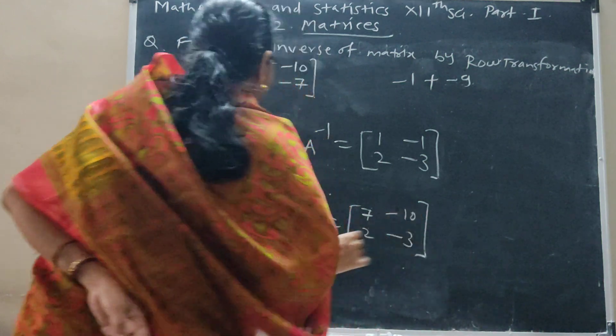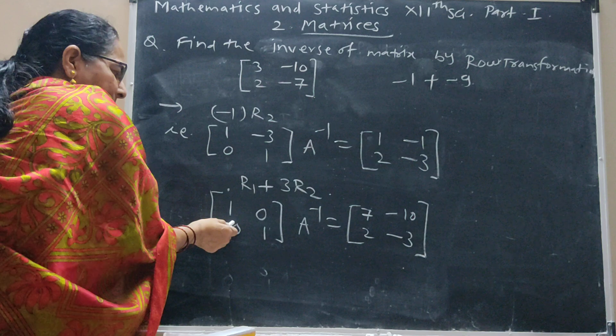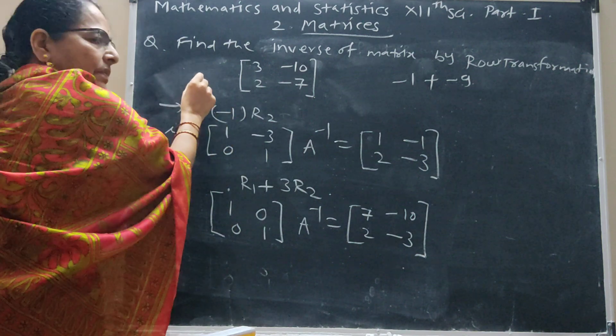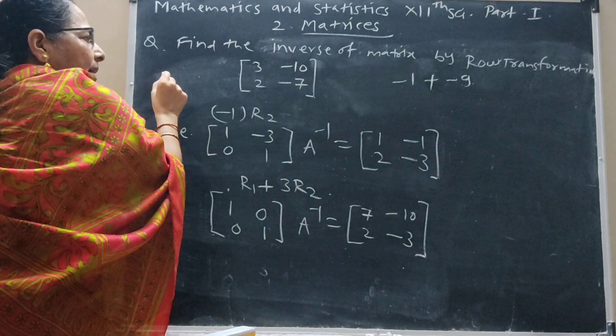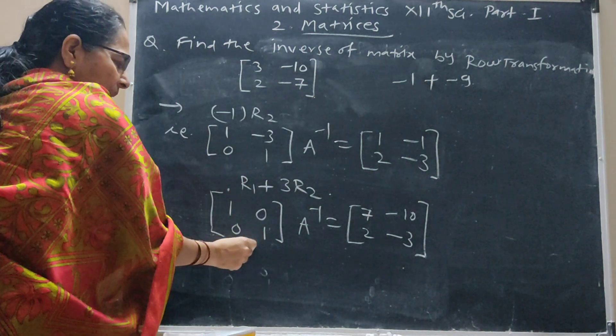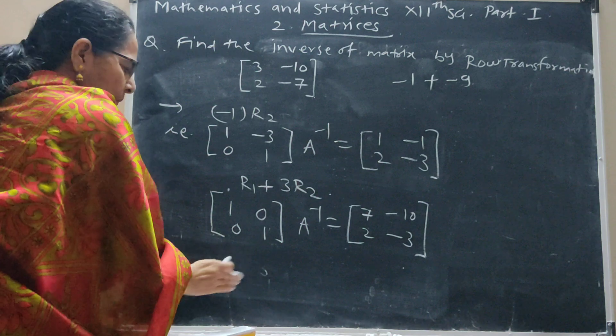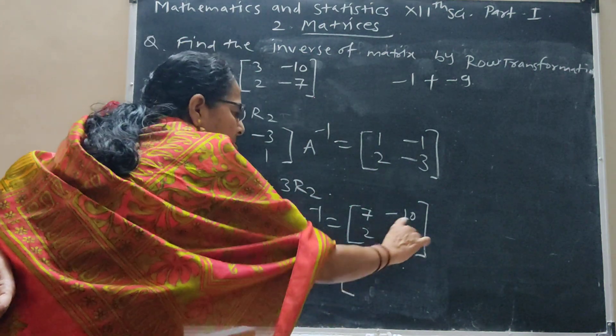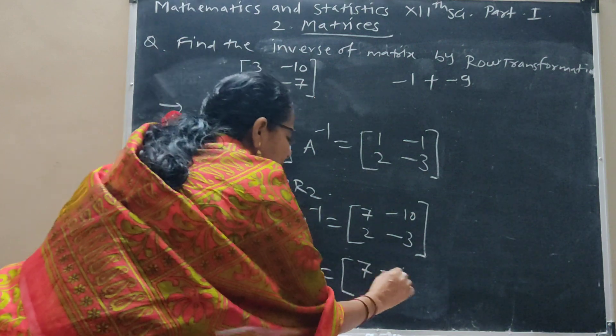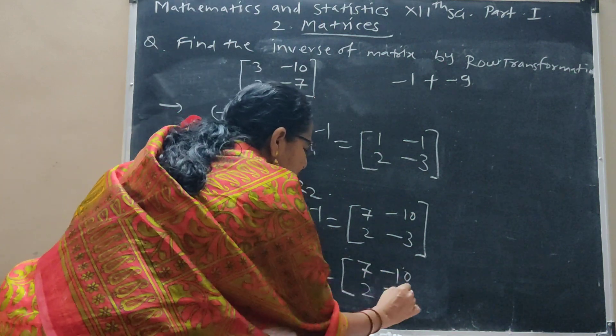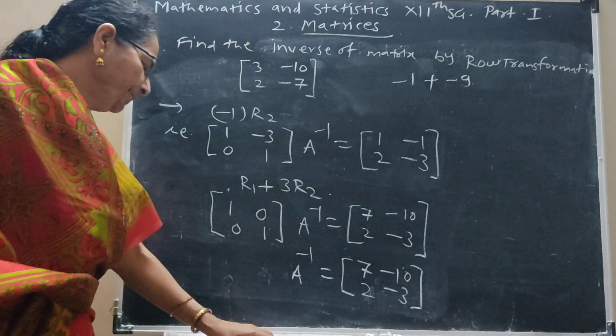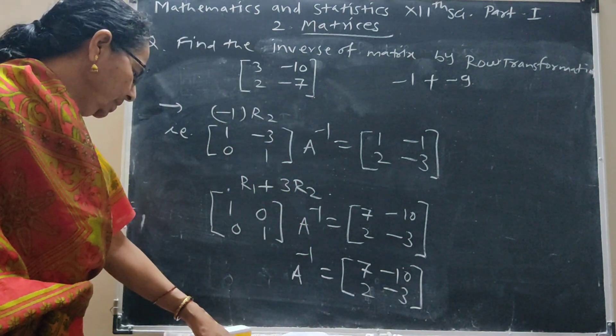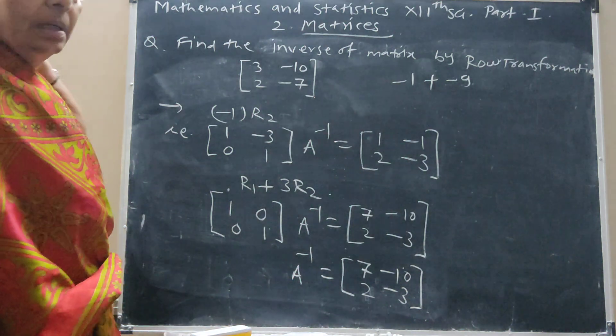Now this A is converted into I. First step, A into A inverse is equal to I. And there, A is converted to I. In this way, [1 0; 0 1], so product of this is A inverse. First and finally, this determinant: [7 -10; 2 -3]. A inverse equals [7 -10; 2 -3], and this is the answer.